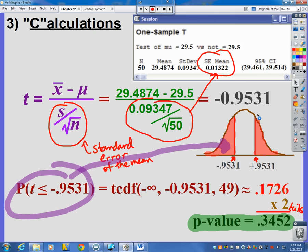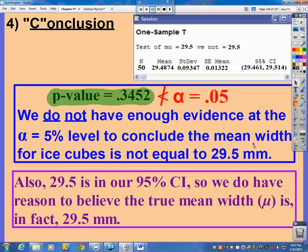So what decision are we going to make at 34.5%? Here's our next part. Since the p-value is not less than our alpha value of 0.05, we conclude we do not have enough evidence at the 0.05 level or the 5% level to conclude the mean width for ice cubes is not equal to our 29.5 millimeters.